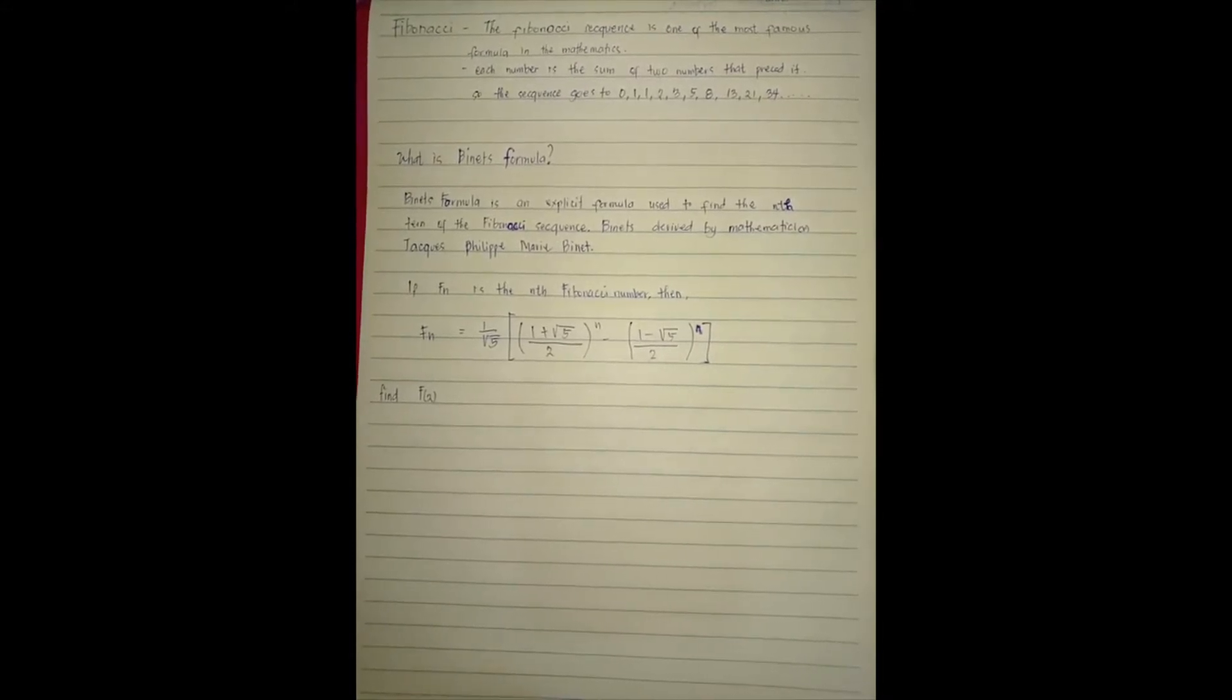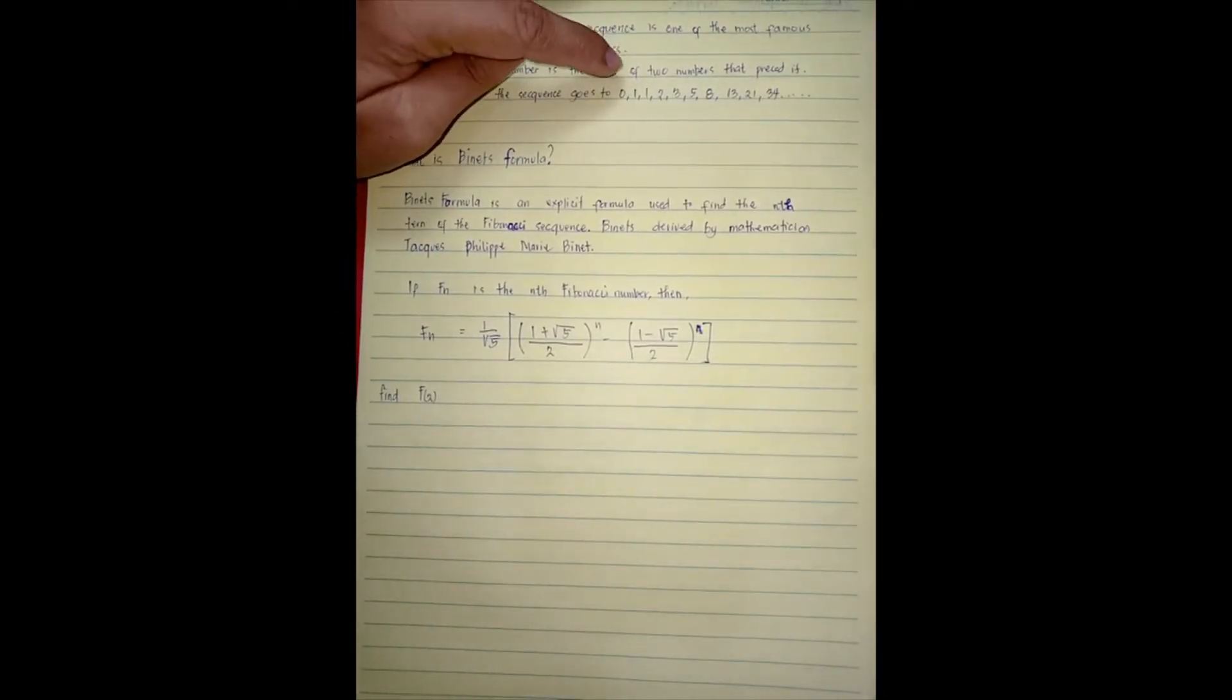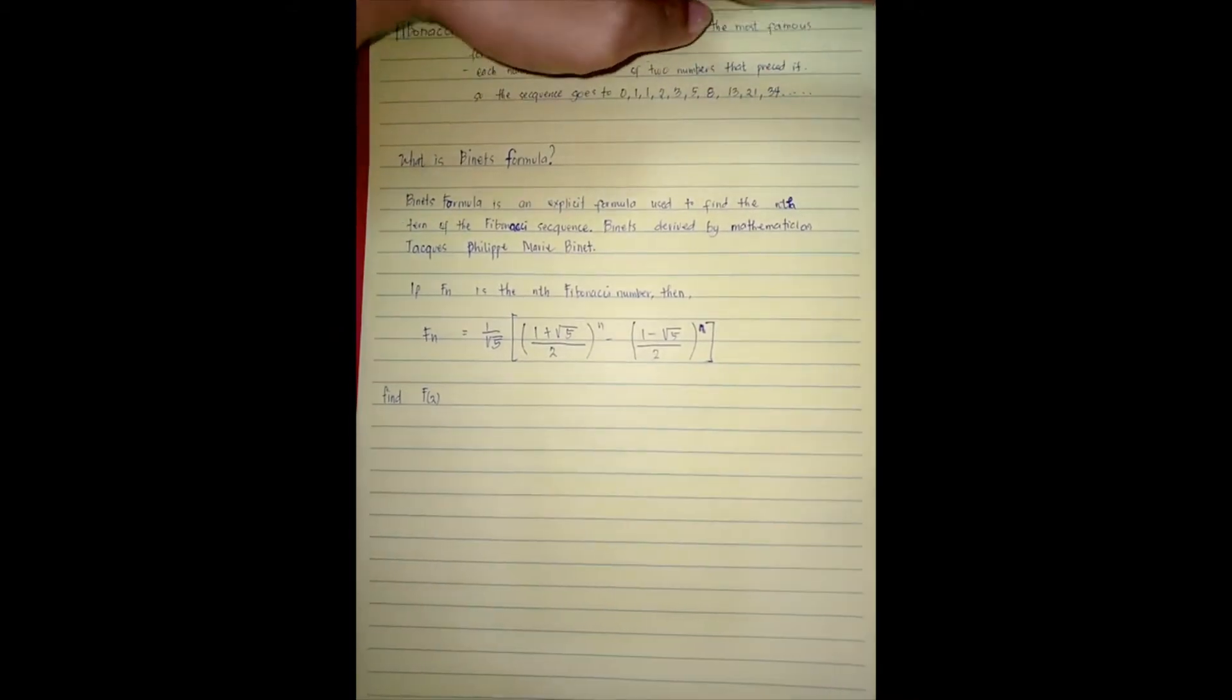So the sequence goes one, zero, tapos one, one plus one is equal to two, and two plus one is equal to three, and so on and so forth.